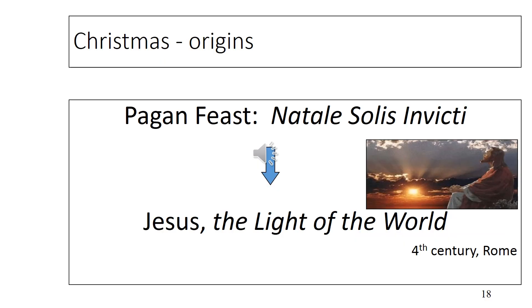For many centuries there was no feast or season of Christmas at all. The only elements of the liturgical year in place in the early church were Sunday, Easter, and some local celebrations of early martyrs. So how and when did the Christmas season emerge? It began in Rome in the 4th century.